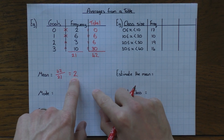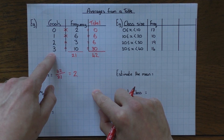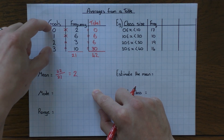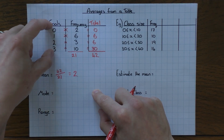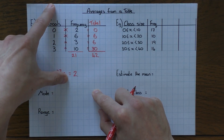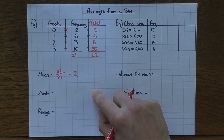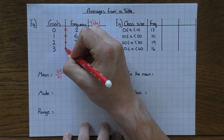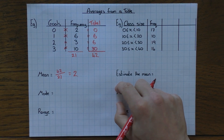A quick heads up: if you do this wrong, it's sometimes easy to spot. If you get a number bigger than the largest value in your table — say the mean was four, five, six, or seven — you know it must be wrong. The mean must fall between the smallest and largest values, which here are zero and three. Anything outside that range is obviously wrong.